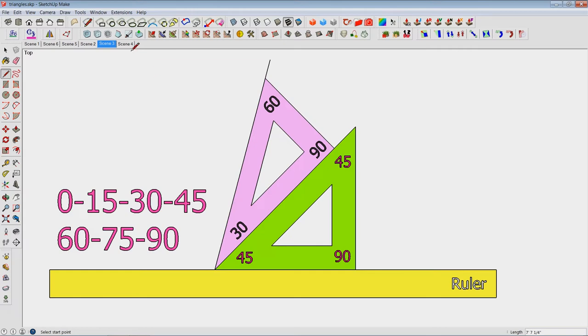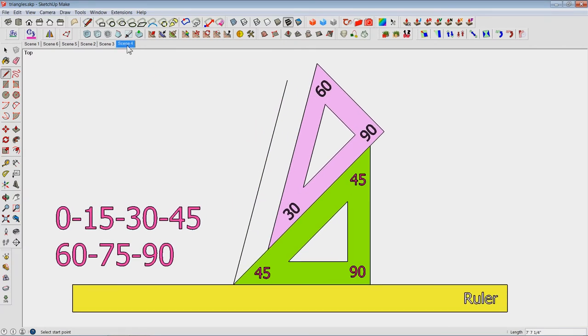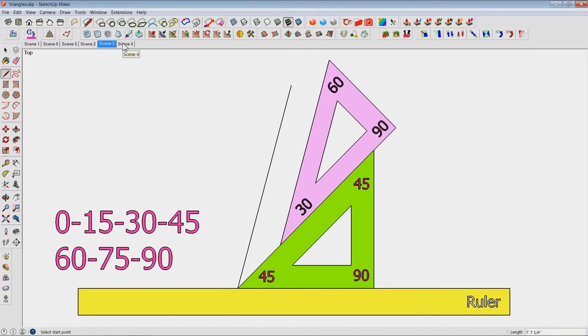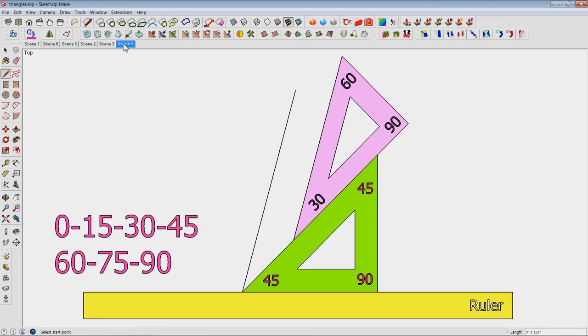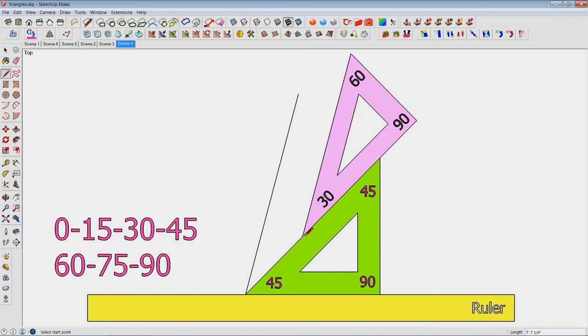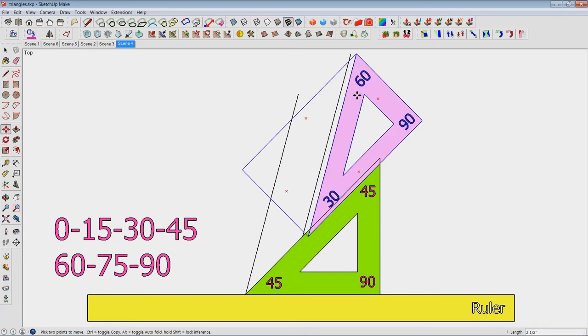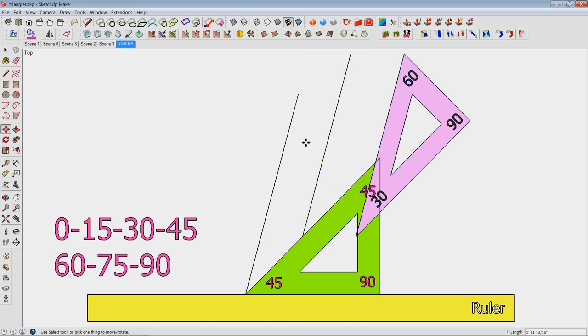The other great thing about triangles is you can slide them. I'll just show it again. You just slide the triangle, don't move anything else except that top triangle, and now I can draw another 75 degree line. I'll just move this over. That is perfectly parallel to the first one. 75 degrees, 75 degrees.